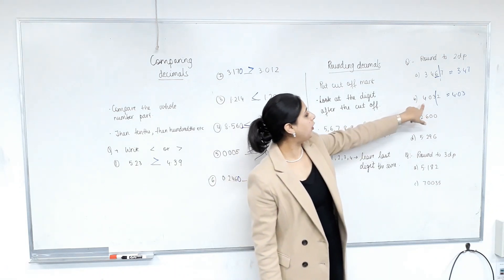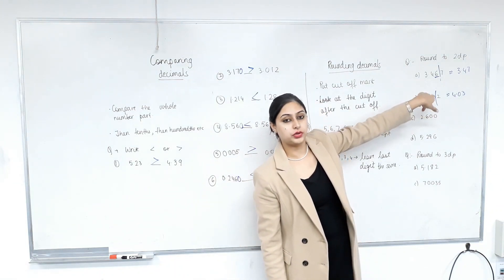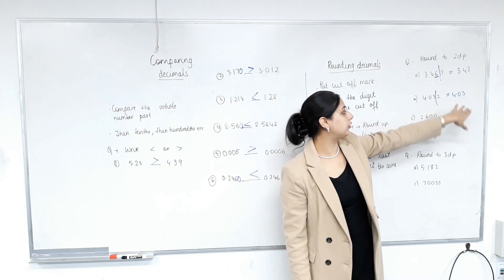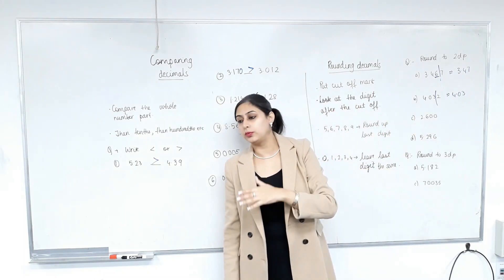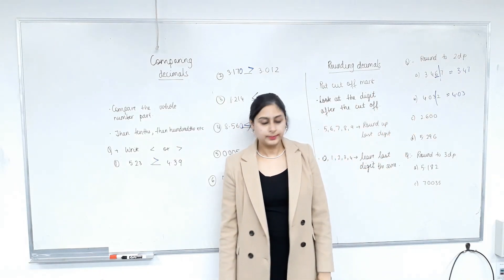Is that clear? So four point zero three two is closer to four point zero three on the number line than four point zero four, isn't it? Yes. Good.